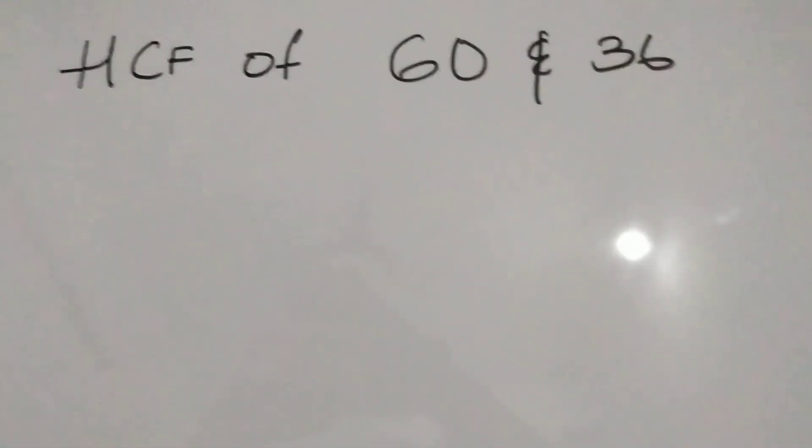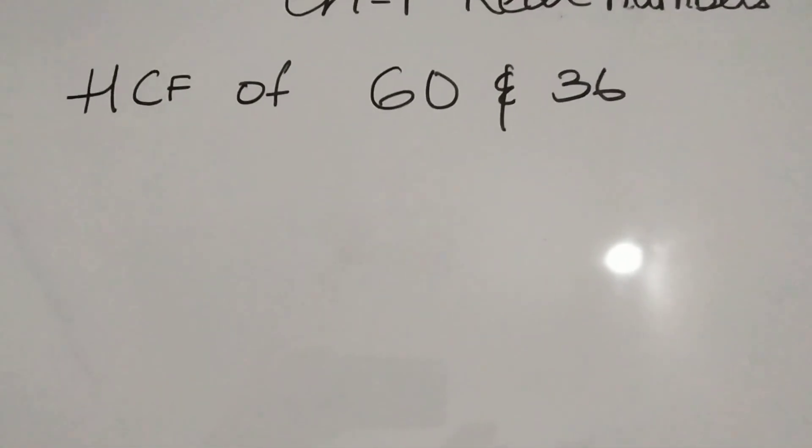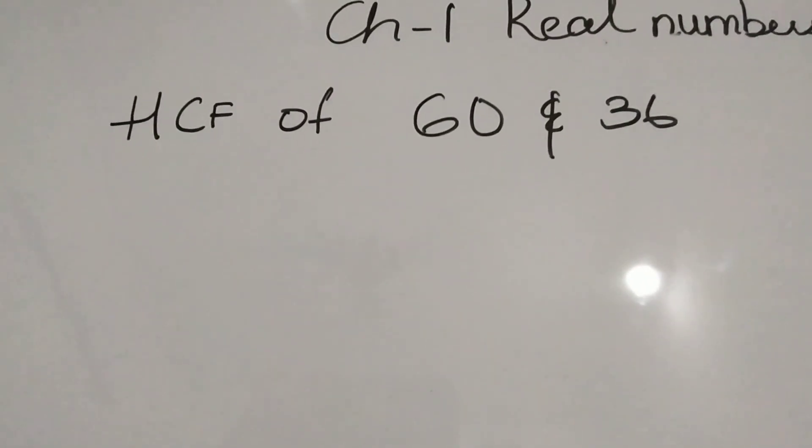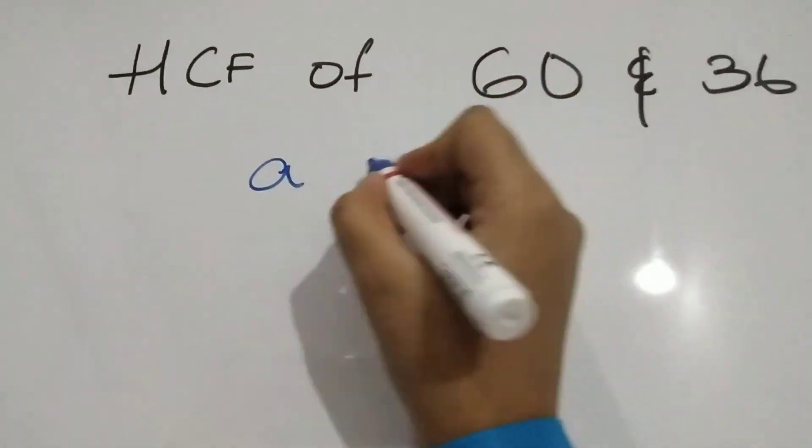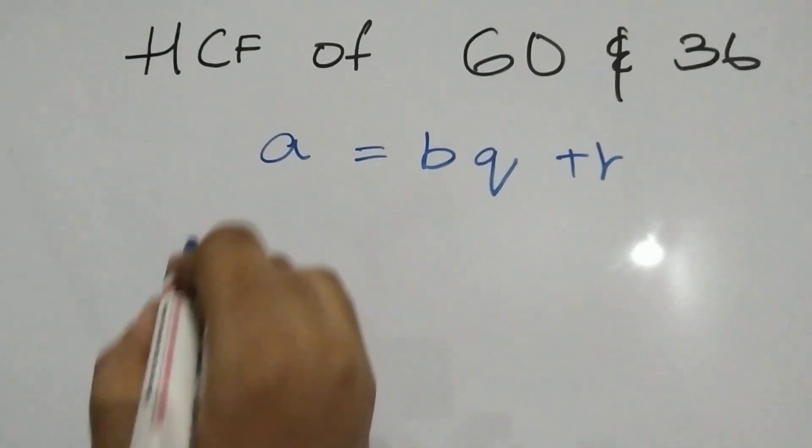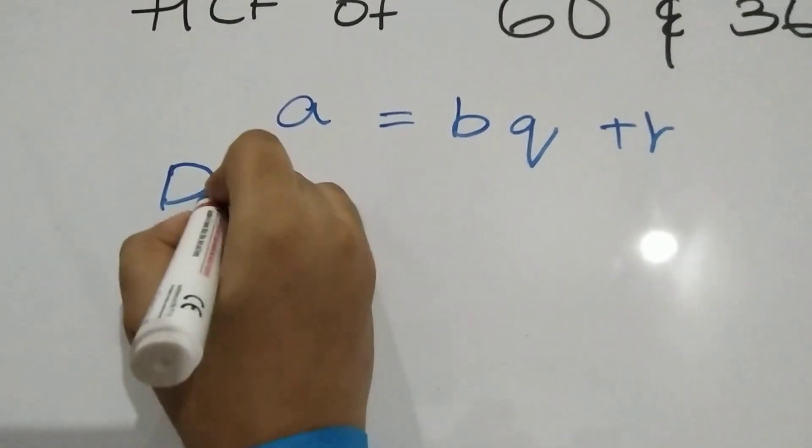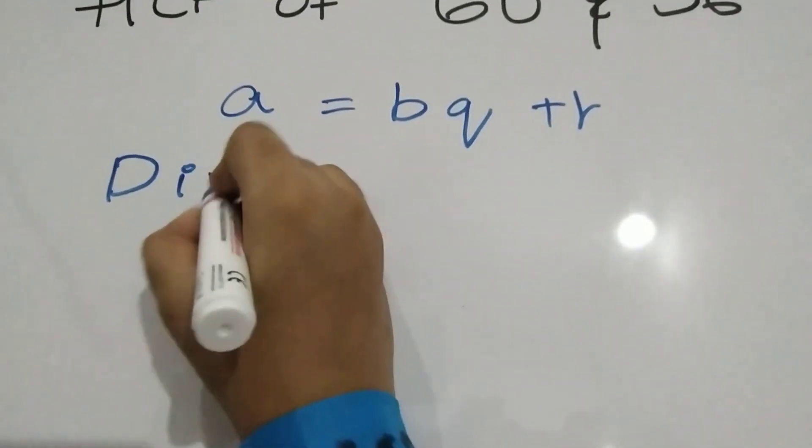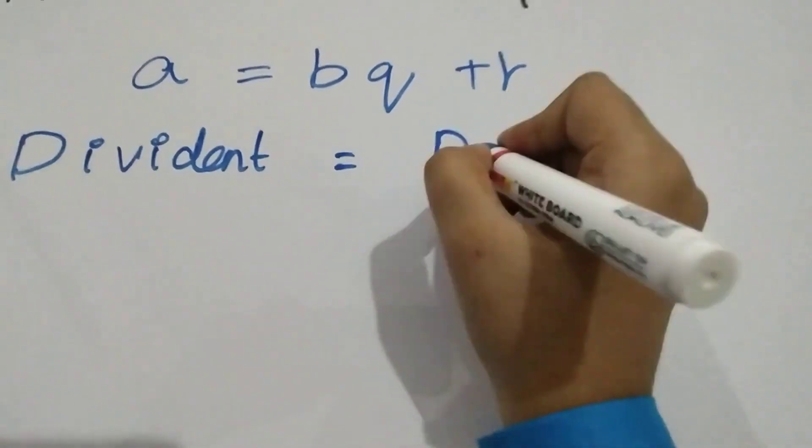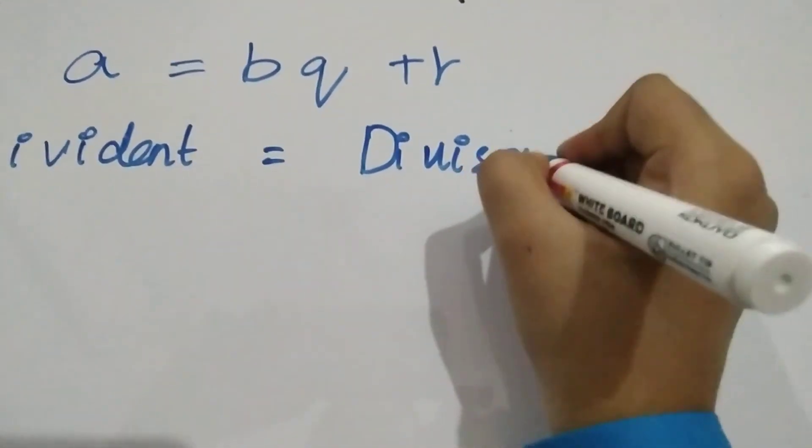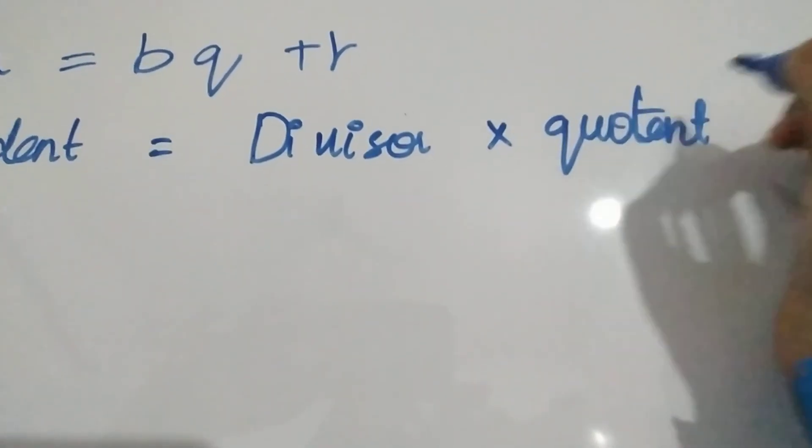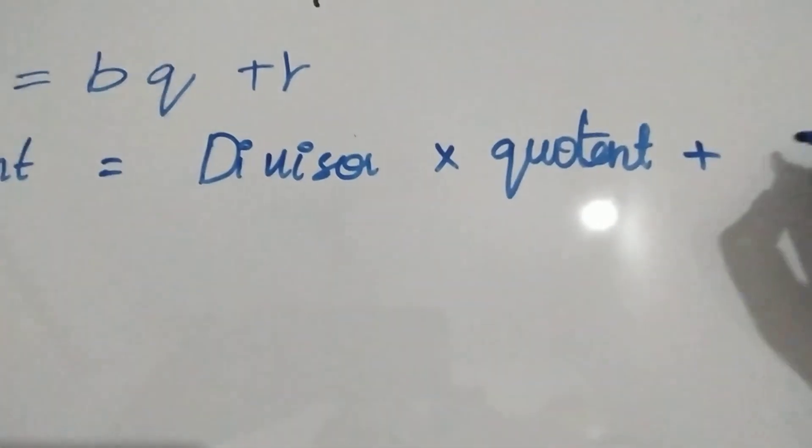Let us find out HCF of 60 and 36. Apply division lemma A is equal to BQ plus R.